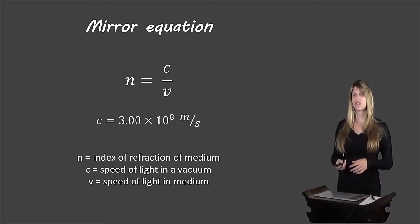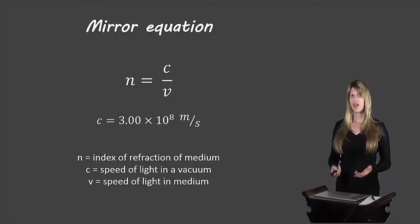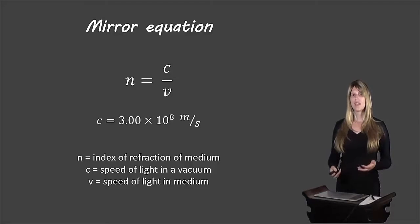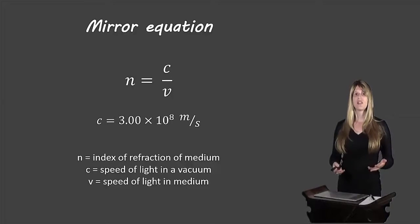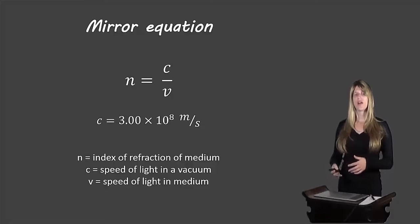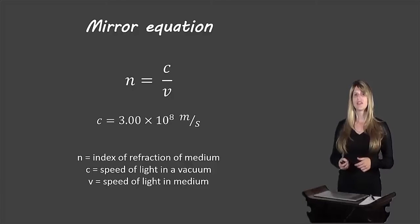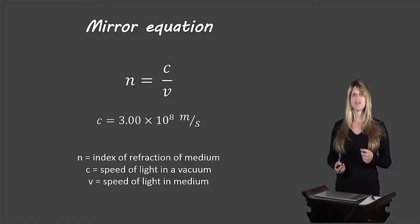So let's take a look at the formula we'll be using: N equals C over V. N stands for the index of refraction of a medium. C is the speed of light in a vacuum and C is always 3.00 times 10 to the 8 meters per second. And V is the speed of light in a specific medium. So in the example it may say you're looking at the speed of light in water, so N will be based on water and V will also be based on water. Or if it asks for the speed of light in diamonds, N will be based on diamonds and V will be based on diamonds. They'll always be based on that same medium, whereas C is always the speed of light in a vacuum.